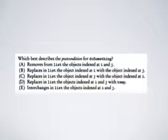Let's see the choices. A: removes from list the object at index i and j — that is incorrect; we can still see they are still there after three lines of execution. B: replaces in list the object at index i with the object at index j — this is just half of the answer. C is also just half of the answer. D: replaces in list the object at index i and j with temp — that is incorrect. The index i will have the value of the original content of index j, and index j will have the value of the original content of index i. So choice E, which interchanges in list the objects indexed at i and j, is the best description of the post condition. The answer is E.